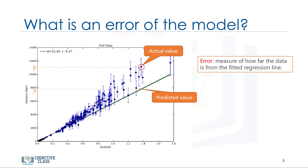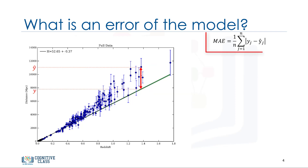In the context of regression, the error of the model is the difference between the data points and the trend line generated by the algorithm. Since there are multiple data points, an error can be determined in multiple ways. Mean absolute error is the mean of the absolute value of the errors. This is the easiest of the metrics to understand since it's just the average error.